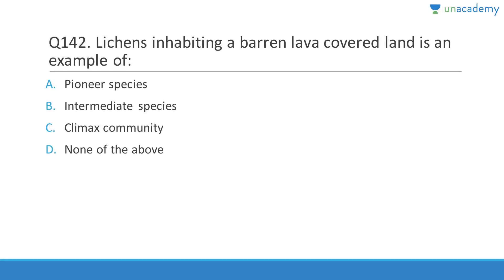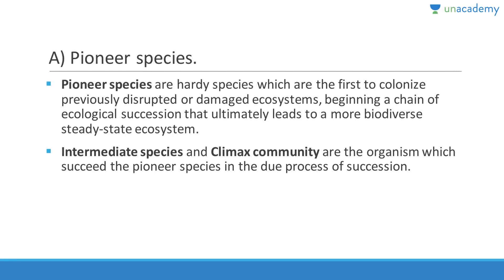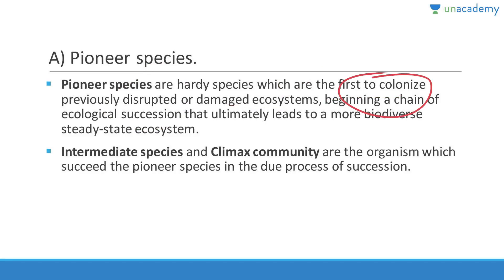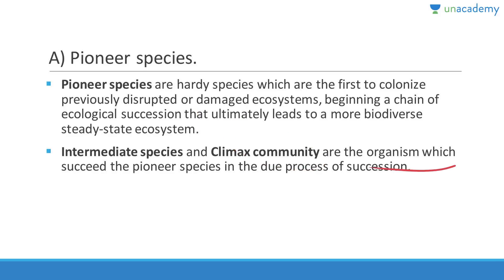Lichens — fungus plus algae in a mutualistic symbiotic relationship — inhabiting barren lava-covered land are an example of pioneer species. Pioneer species are hardy species that are the first to colonize a previously disrupted or damaged ecosystem, beginning a chain of ecological succession that ultimately leads to a more biodiverse steady-state ecosystem.